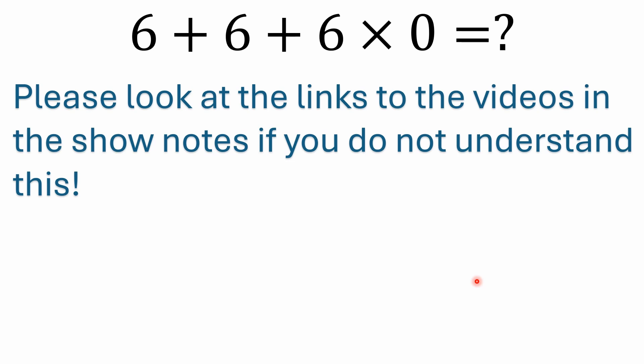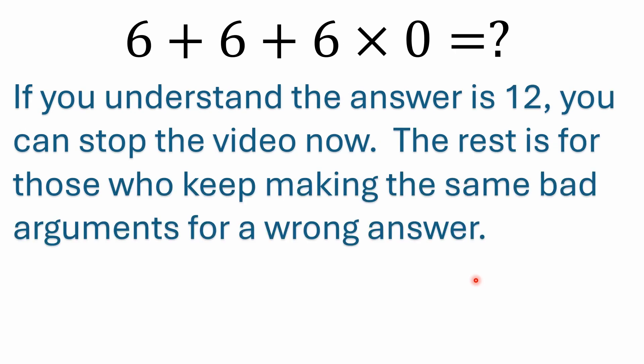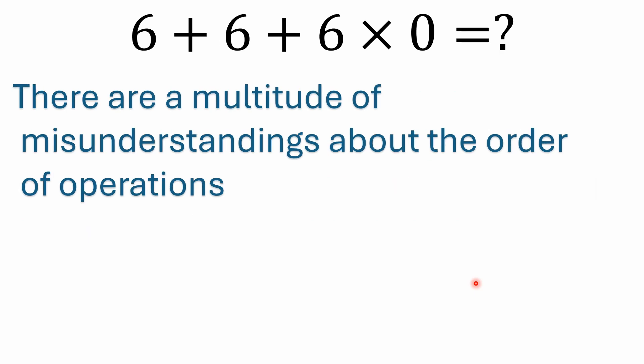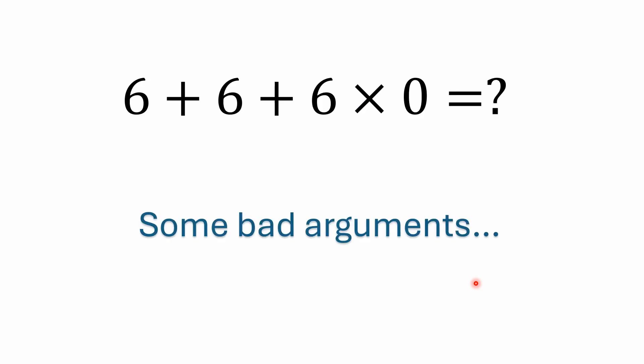Based on a lot of the comments I get, people make the same mistakes over and over. If you understand it's 12, go ahead and move on. The rest of this is for those who keep making the same bad arguments for a wrong answer. There are a lot of misunderstandings about the order of operations — a lot of people have the wrong idea about it.